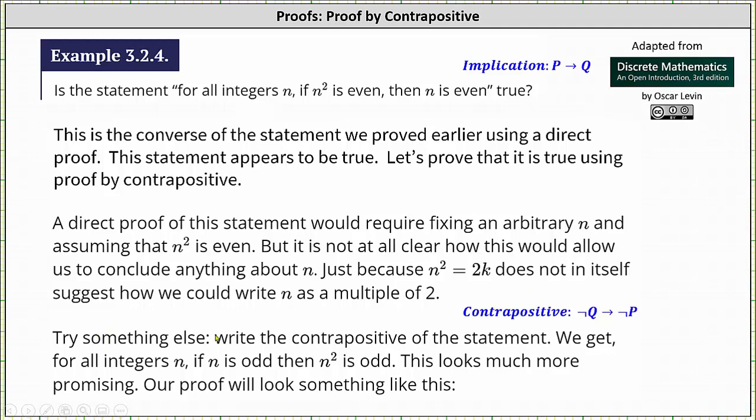Let's try something else: write the contrapositive of the statement. The contrapositive of 'for all integers n, if n² is even, then n is even' is 'for all integers n, if n is not even (meaning n is odd), then n² is not even (meaning n² is odd).'